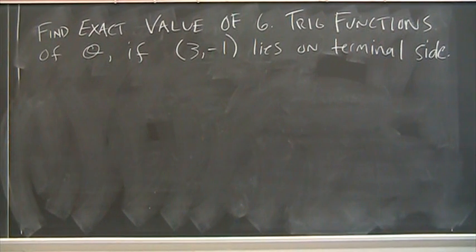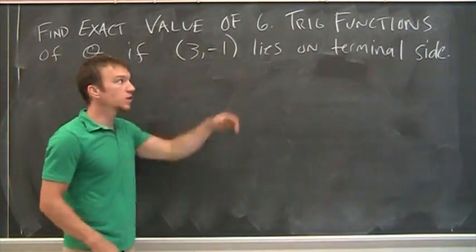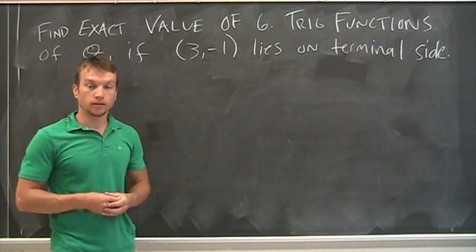Okay, directions are, find the exact value of the six trig functions of theta if the point (3, -1) lies on the terminal side of theta.